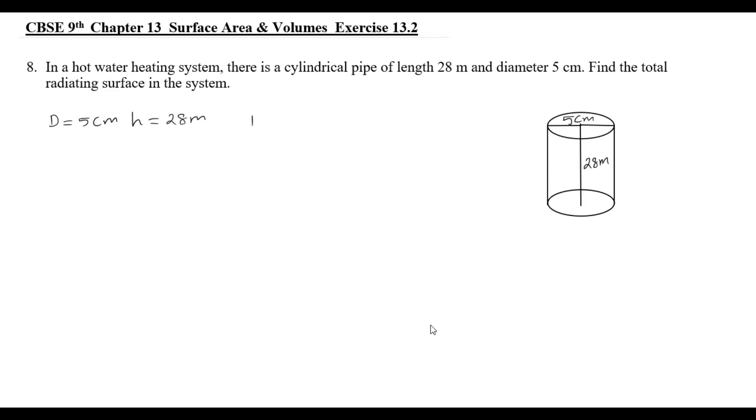Diameter is 2 times radius. So, the formula is 2 times radius. Now, total radiating surface - what we need to understand is the curved surface area we need to find out.